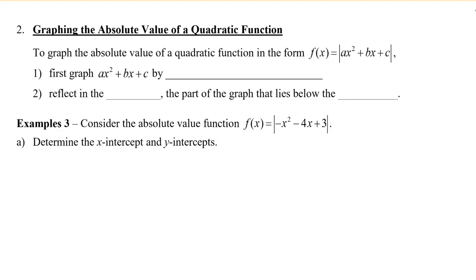Let's take a look at how to graph the absolute value of a quadratic function. Similar to a linear function, we're going to graph the parabola first, and then we're going to reflect it. So we're going to first graph f of x equals ax squared plus bx plus c. But remember, in order to graph a parabola, we first need to change it to vertex form. And then we're going to take whatever is below the x-axis and reflect it above the x-axis.